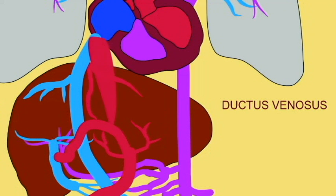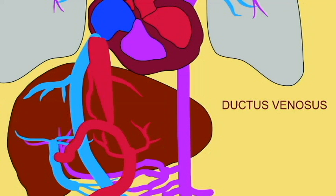A shunt exists which connects the umbilical vein as it travels through the liver to the inferior vena cava, just as it enters the right atrium of the heart. This shunt is known as the ductus venosus in the fetus, which becomes the ligamentum venosum in adults.